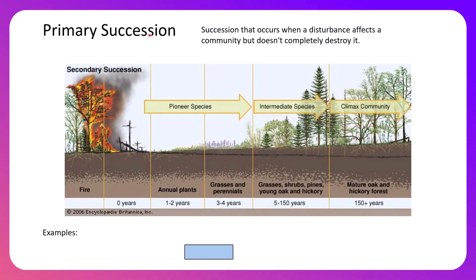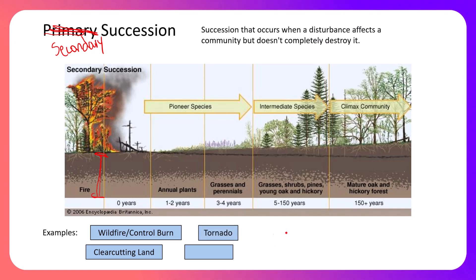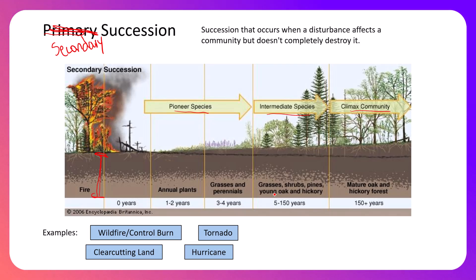The second type is secondary succession. Secondary succession occurs with a smaller-scale disturbance, and the big difference is that your starting point begins with some form of soil left behind and probably some life left in that soil. Examples could be a fire, clear-cutting land for farming, tornadic activity, or a hurricane. These disturbances cause land to change, but not so severely that nothing is left behind. This does take up to 150 years in some cases, but not hundreds of years because the soil is already there.